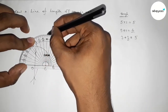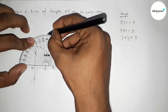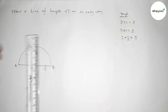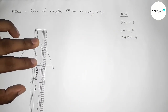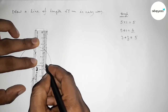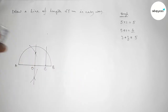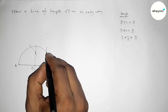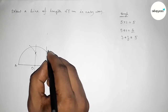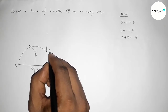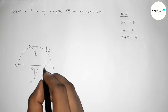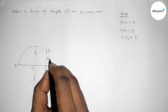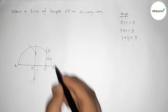Drawing a 90 degree angle at point C using a protractor, and joining the line which meets the semicircle at point D. So the line CD equals root 5 centimeter.